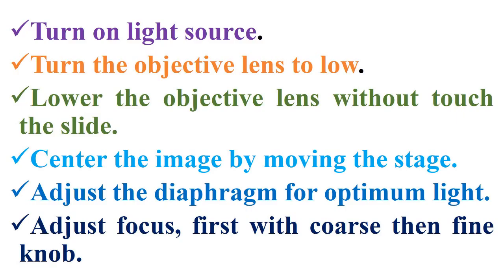In short: turn on the light source, then turn the objective lens to low, then lower the image by moving the stage, then adjust the stage, then adjust the diaphragm for optimum light, and finally adjust focus — first with the coarse knob, then the fine knob.